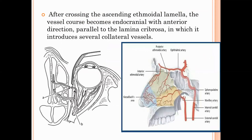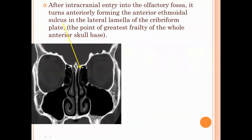After crossing the ascending ethmoidal lamella, the vessel's course becomes endocranial, parallel to the lamina cribrosa, and at that point it gives off several collateral vessels. After the intracranial entry into the olfactory fossa area, it runs anteriorly, forming the anterior ethmoidal sulcus within the lateral lamina of the cribriform plate, as shown by the yellow arrow. This part is very vulnerable during anterior skull base surgery and is a point of traumatic injury during endoscopic sinus surgery.